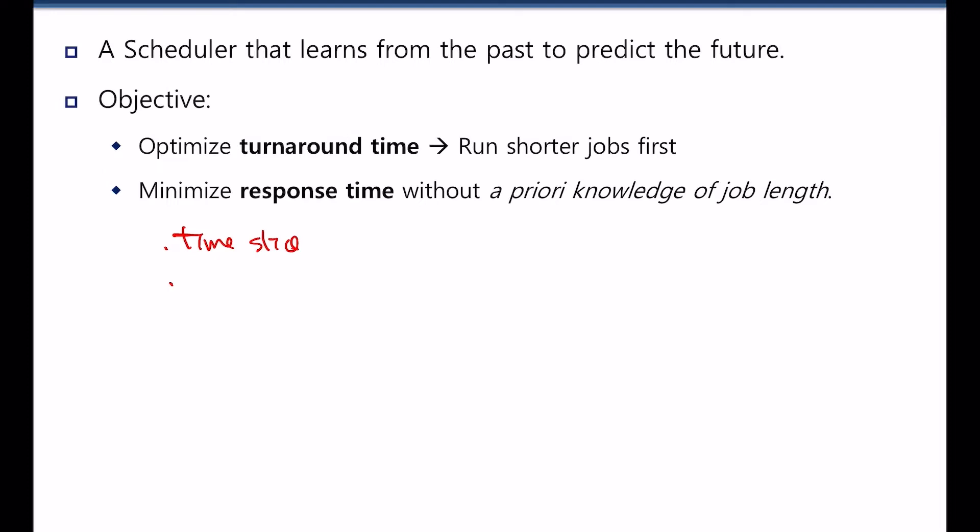Now we are going to discuss a new scheduler that learns from the past to predict the future and adjusts the priority of the algorithm based upon its behavior. The objective is for processes that do not require lots of CPU time, it gives priority. For processes that require lots of CPU time, it reduces the priority. It minimizes response time without the knowledge of the job's CPU time usage behavior.